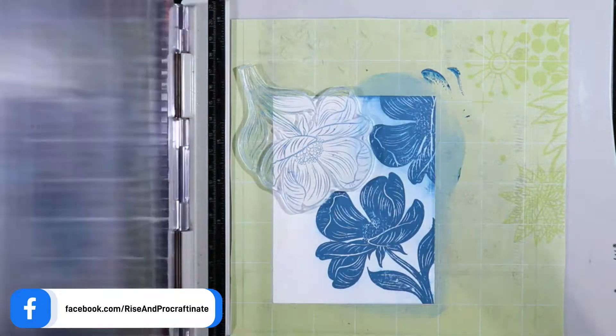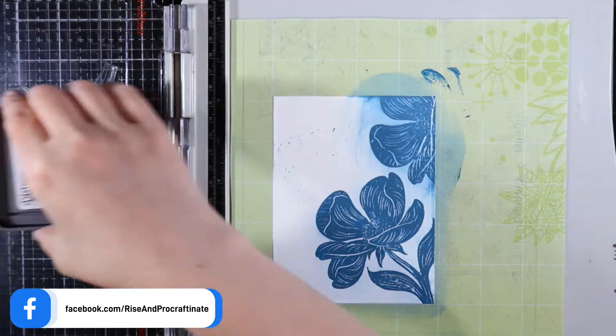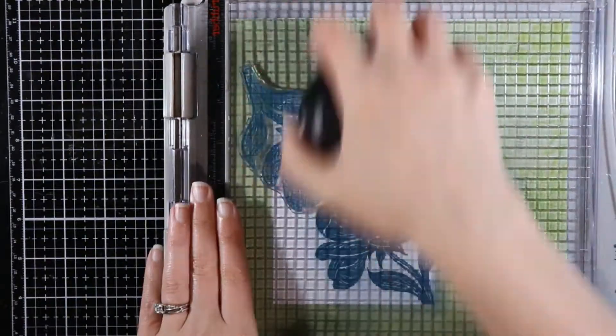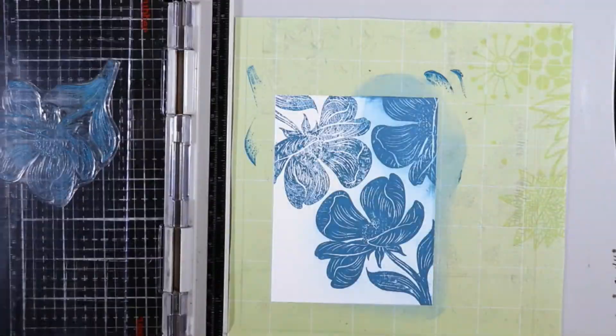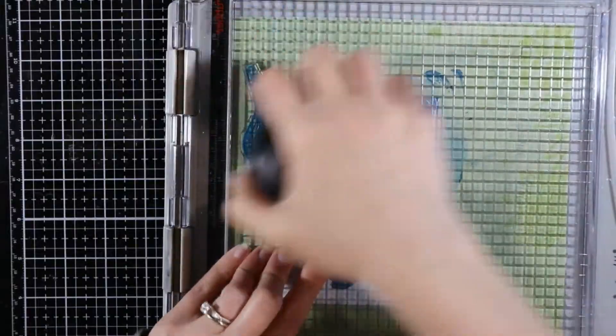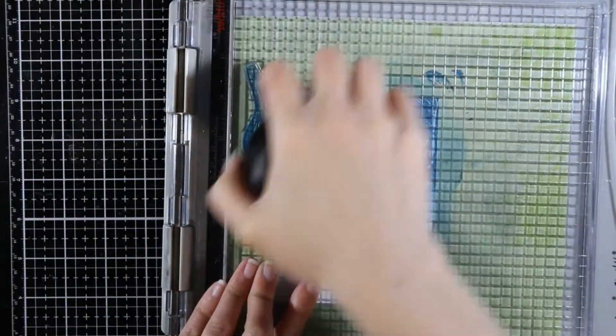Now you can see that I did get a nice smeared impression, and that is what I'm looking for here. I'm going to move my stamp and do it again so you can see how this technique works. I'm going to stamp and smear. I'm going to stamp each one of these twice and smear because I wasn't getting very good impressions.